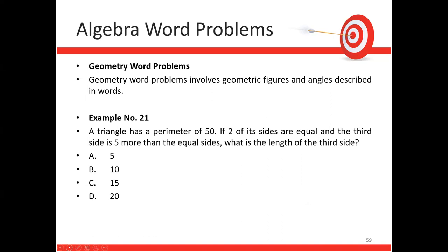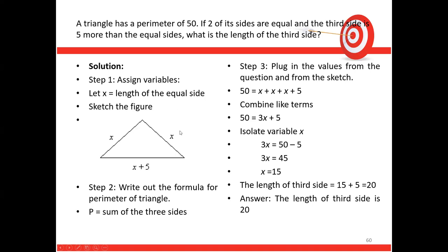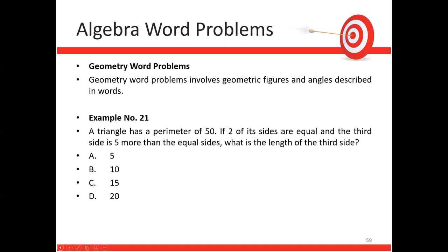Geometry Word Problems: Example 21 — A triangle has a perimeter of 50. Two sides are equal and the third side is 5 more than the equal sides. Let x = length of equal side. Then x + x + (x + 5) = 50 → 3x + 5 = 50 → x = 15. The third side is 15 + 5 = 20.